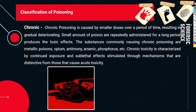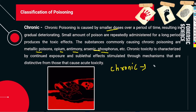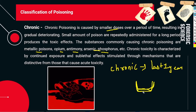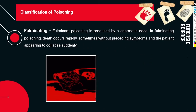Chronic poisoning involves smaller doses administered repeatedly over a long period of time, resulting in gradual deterioration. Small amounts of poison are given repeatedly, which slowly produces a toxic effect. Commonly used agents include metallic poisons — opium, antimony, arsenic, phosphorus, etc. For example, a small amount of poison mixed into a person's daily food every day over the course of a year — this is chronic poisoning.